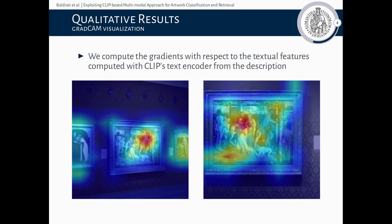First of all, we performed a qualitative experiment using the gradient technique, in order to have a better idea of the portion of the image that CLIP considers most important when it associates a text with an image. The technique we used is a generalization of GradCAM, where instead of computing gradients with respect to an output class, gradients are computed with respect to textual features computed with CLIP's text encoder from the description. This approach makes each heatmap calculated by GradCAM dependent on the individual description, showing us the portion of the image that CLIP mostly associates with it. From the example in the slide, we can see that CLIP places attention on the most significant portion of the artwork image. This made us confident that CLIP would work very well in the artwork domain.